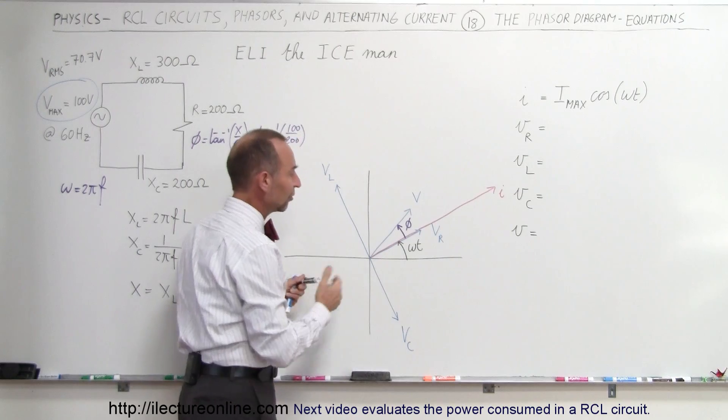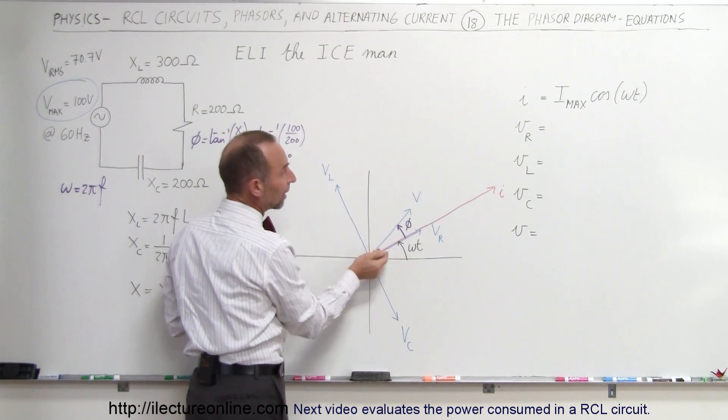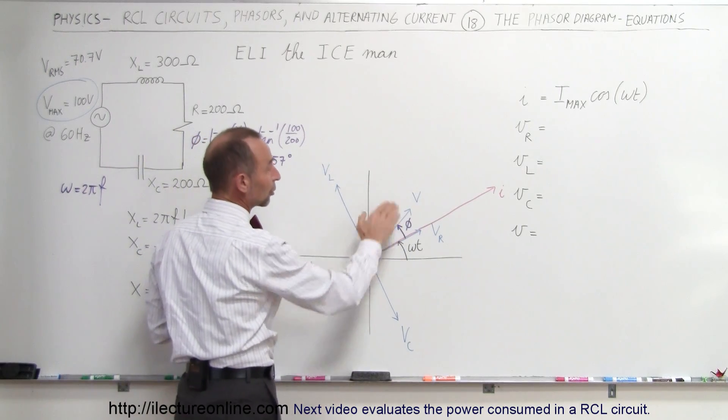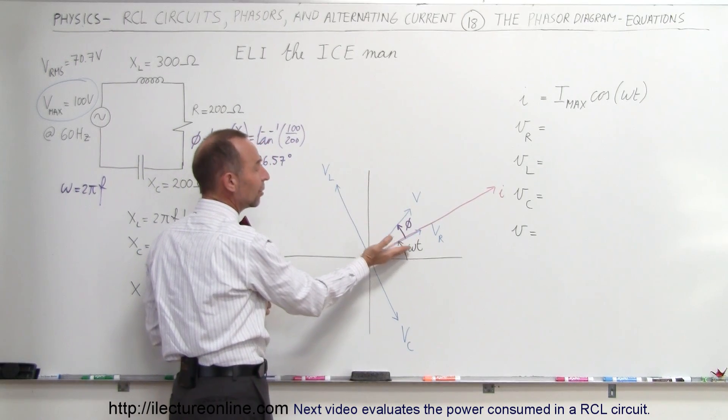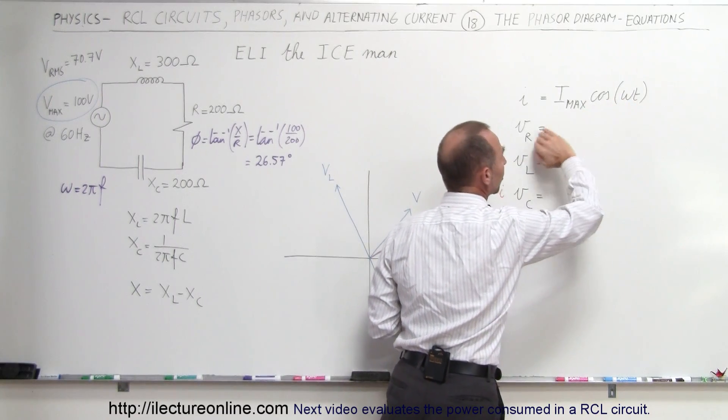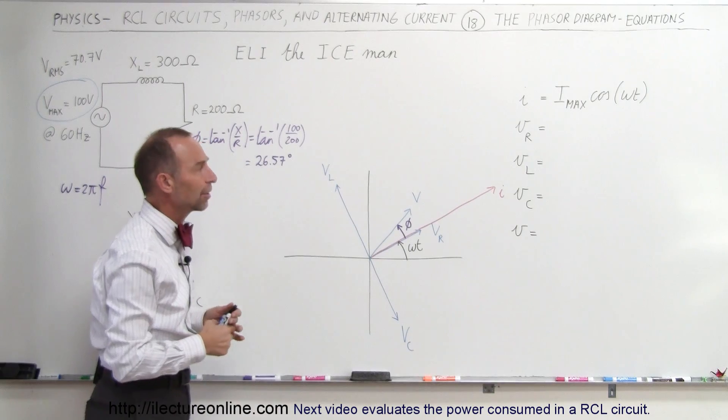So notice that if T is equal to zero, there would be zero angle, and I would equal I max. So at that moment you'd have the maximum current. At this moment, the current has waned somewhat because the angle of omega T is getting bigger, and as the angle gets bigger, the cosine of the angle gets smaller, so you can see that the current is dropping off from its maximum value.